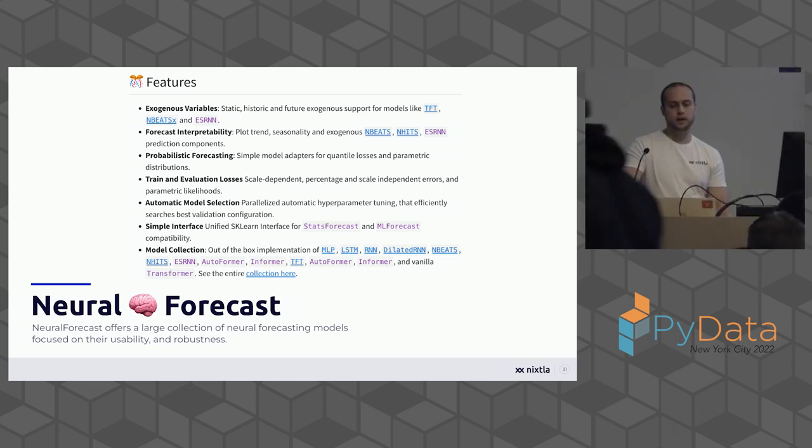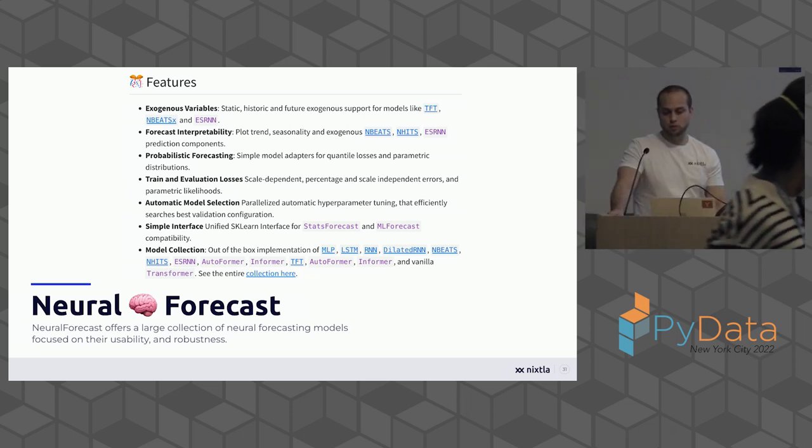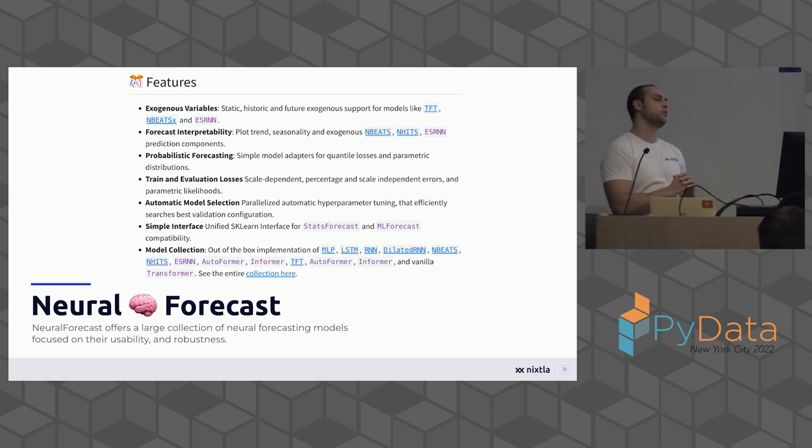And those methods, and making those methods available in a scalable and user-friendly way, is what we are trying to do in the NeuralForecast package of the Nixtla ecosystem. The features are you can include exogenous variables, forecast interpretability with certain families of models. You can do probabilistic forecasting, different error metrics, automatic model selection. We made it so it's very easy for new users to do auto-RNNs or auto-LSTMs where you can do hyperparameter optimization over a space of different configurations. It has a simple interface, the exact same interface as the StatsForecast library, and it has a wide collection of deep learning models: MLPs, LSTMs, RNNs, dilated RNNs, models from the N-BEATS family, and a lot of the Informer family models.